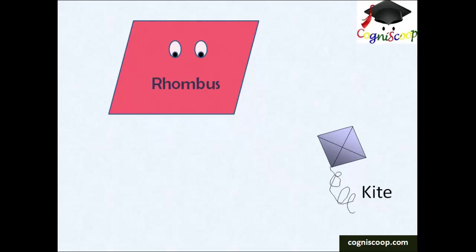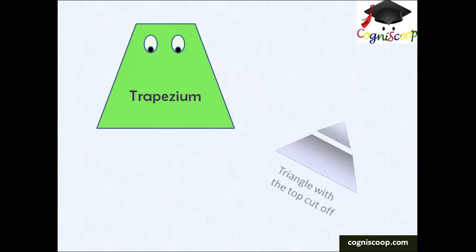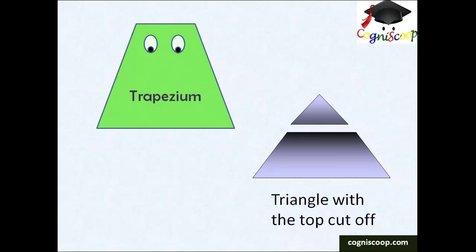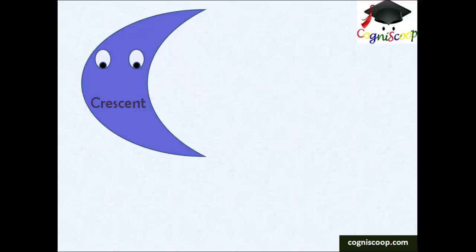Trapezium is a closed figure with four sides and four corners. The angles are not 90 degrees. One pair is parallel with one side longer than the other. If a triangle step is cut off, it will be a perfect example of trapezium.